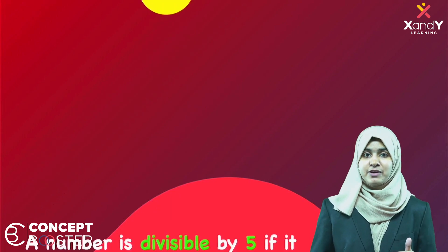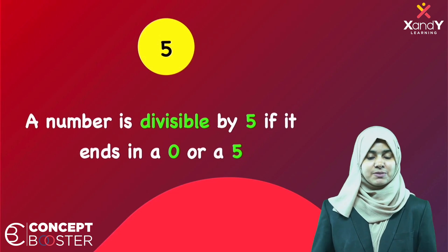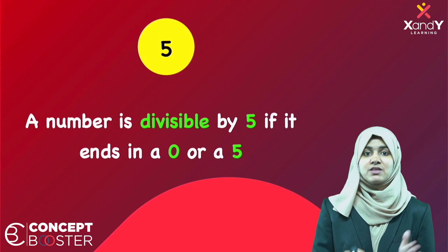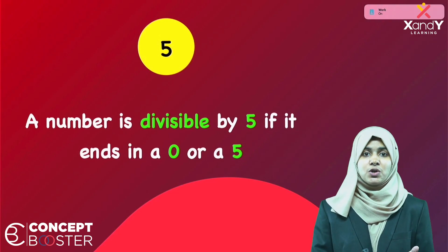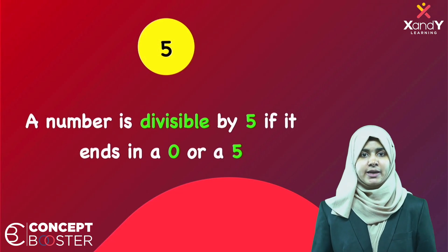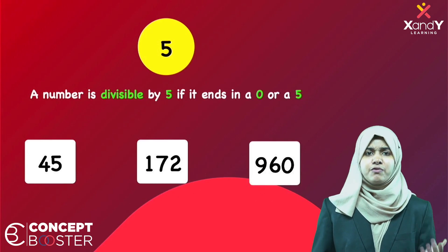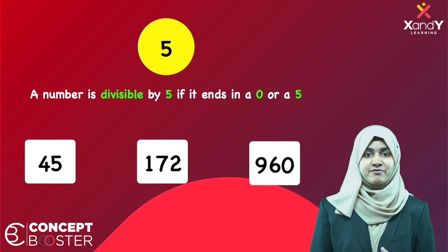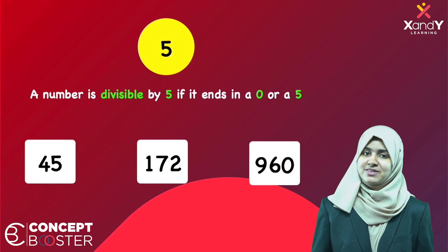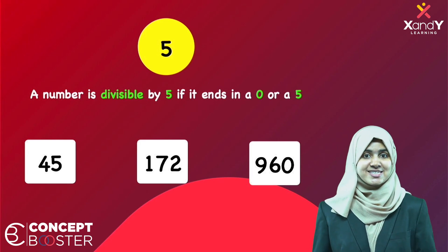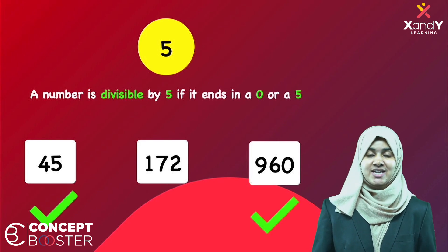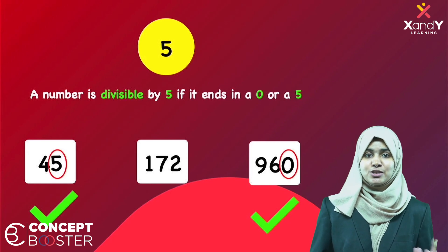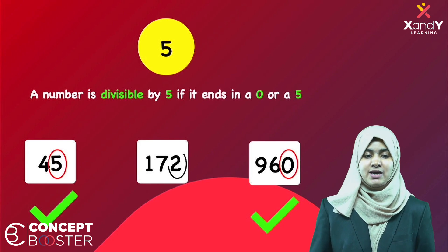Next, the divisibility rule for 5. A number is divisible by 5 if it ends with 0 or 5. For example, from the numbers 45, 172, and 960 — 45 ends with 5 and 960 ends with 0, so both are divisible by 5. But 172 ends with 2, so it is not divisible by 5.